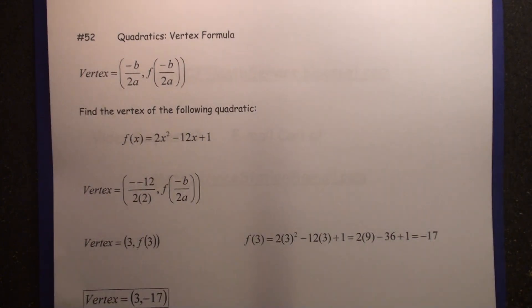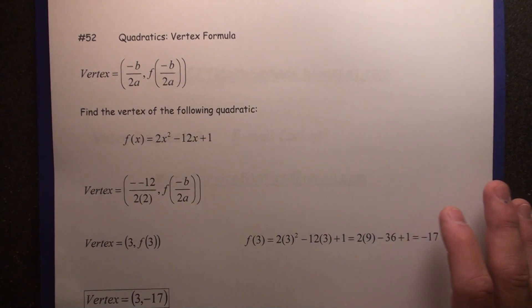The formula is just as it shows: negative b over 2a is the x value, and then the y value would be found by plugging in that x value into the function itself.